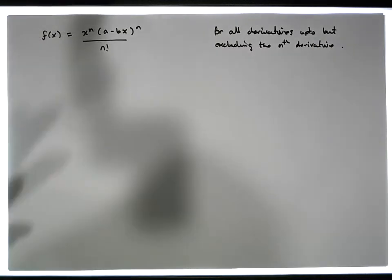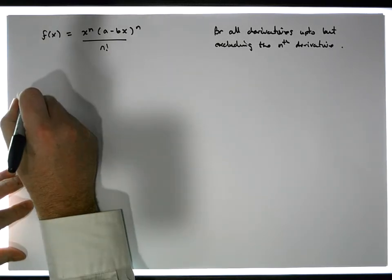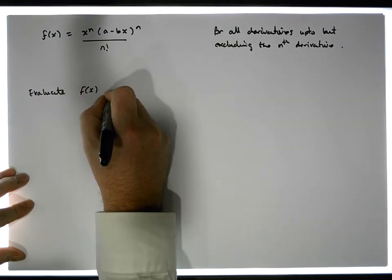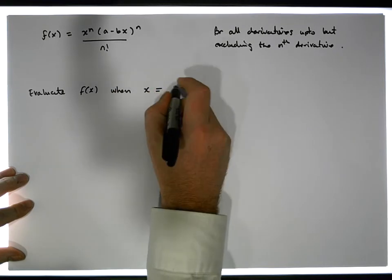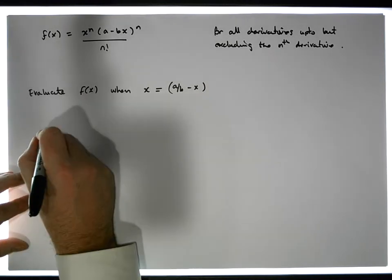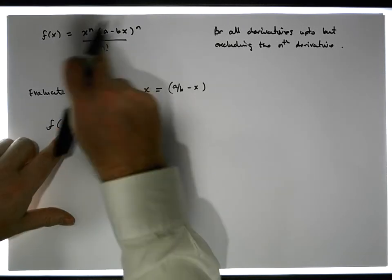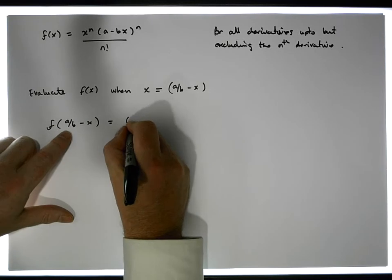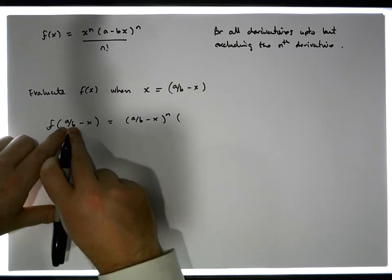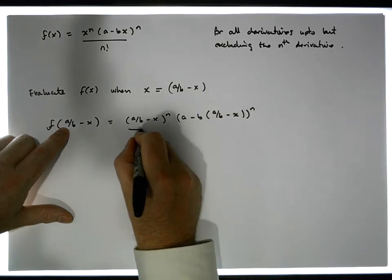There's another important property of f(x). Let's evaluate f(x) when x is equal to a/b minus x. What do we get? f evaluated at (a/b - x) is going to be equal to... everywhere we see x, we put in (a/b - x). So it gives us (a/b - x) raised to the power of n, times (a minus b times (a/b - x)) raised to the power of n, all divided by n factorial.